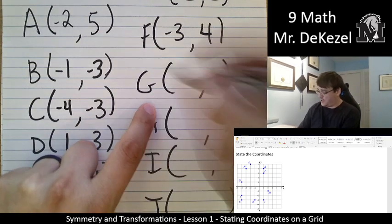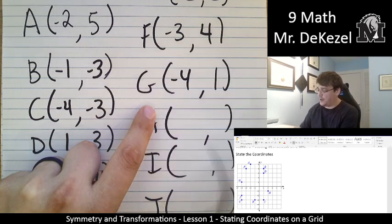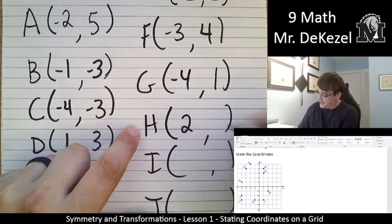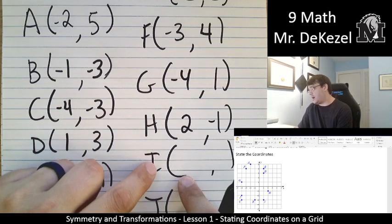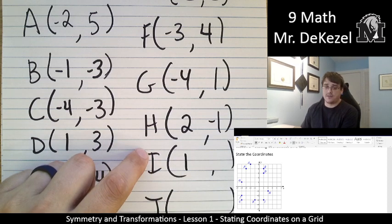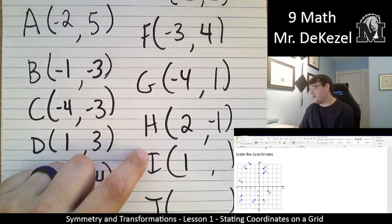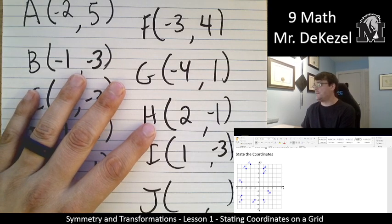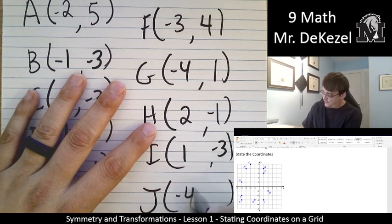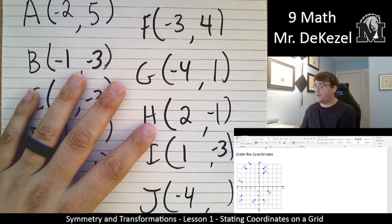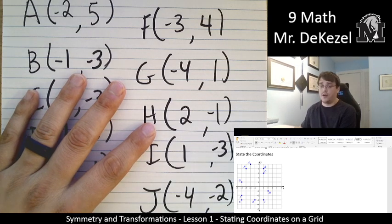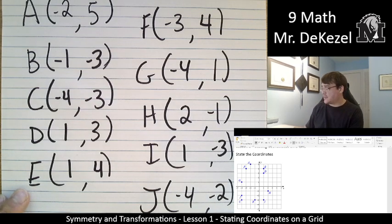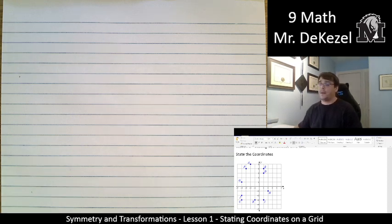G is 4 to the left, so that's minus 4, and 1 up, that's positive 1. H is 2 to the right, so that's positive 2, and 1 down, so that's negative 1. I is 1 to the right, so that's positive 1, and then 1, 2, 3 down, so that's negative 3 on the y value. And then J is 1, 2, minus 4 for an x value, and minus 2 goes 2 down for the y value. And if you're unsure about any of those, why I got that, please ask that question. We're going to do one more, we're going to do it quicker.